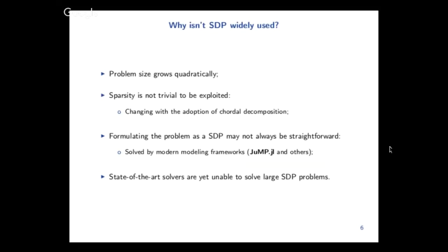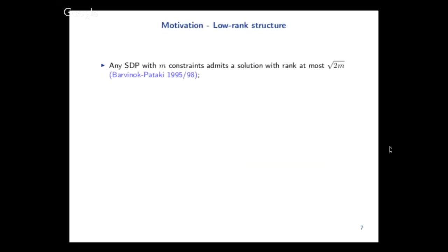In practice, state-of-the-art solvers cannot solve the largest SDPs. One way to try to tackle this is by exploiting sparsity, but we chose to exploit the low-rank structure that several SDP problems have. There is a theorem that says that if you have an SDP with m constraints, you can find a solution that has at most rank square root of 2m. So if you don't have a lot of constraints, you will have at least one solution that's low rank.